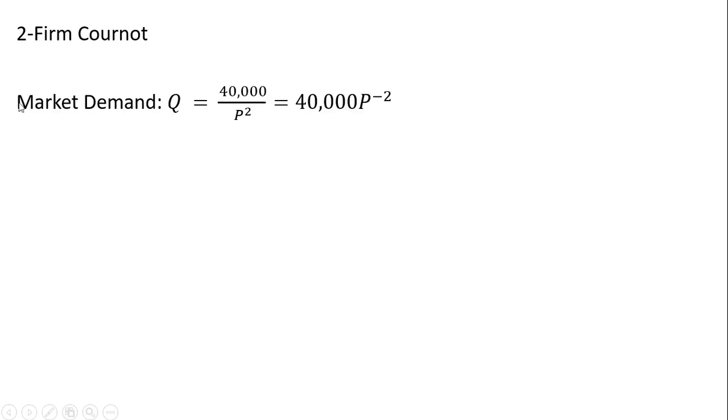We have a two-firm Cournot. The market demand is given by the following, so this is just constant elasticity of demand where the price elasticity of demand is constant at minus 2, the exponent on the price term.